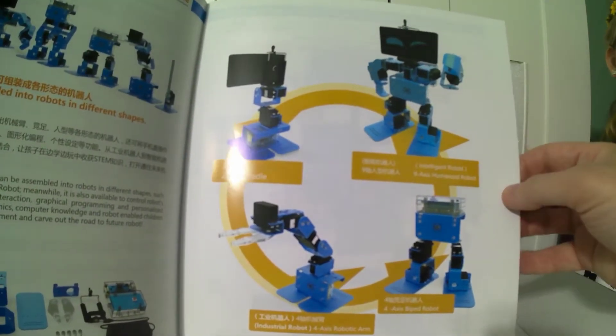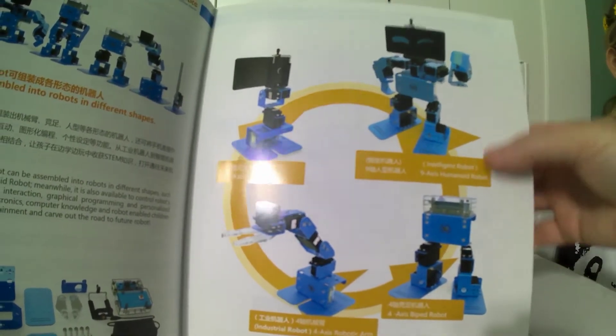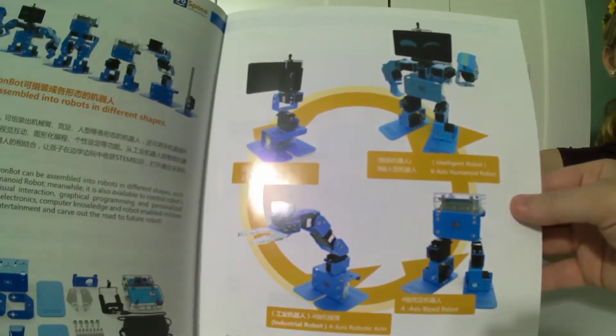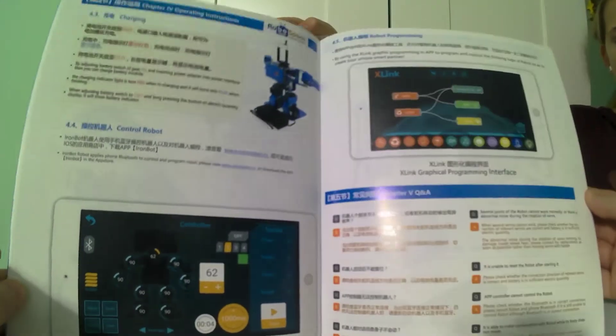We're going to focus on the humanoid because that seems to have the most features, and I think that will be the best one for the purpose of this test and review. When you get into it, it has building instructions and programming instructions.